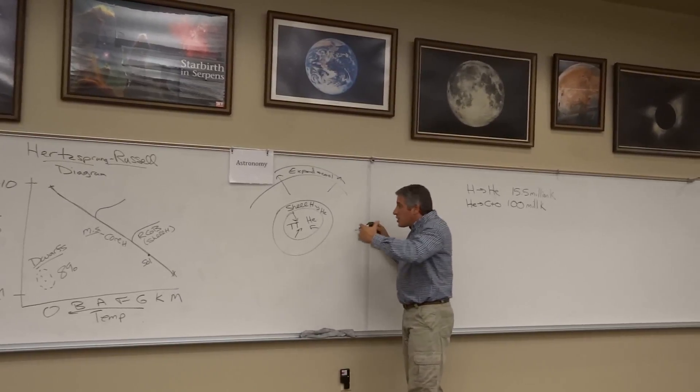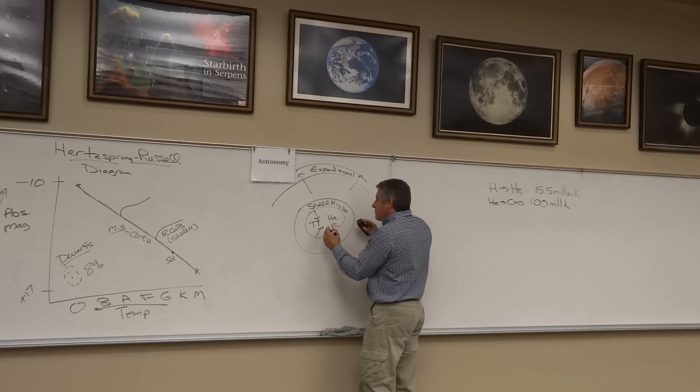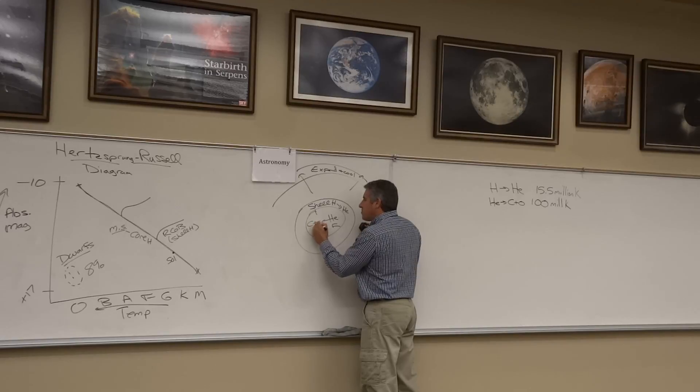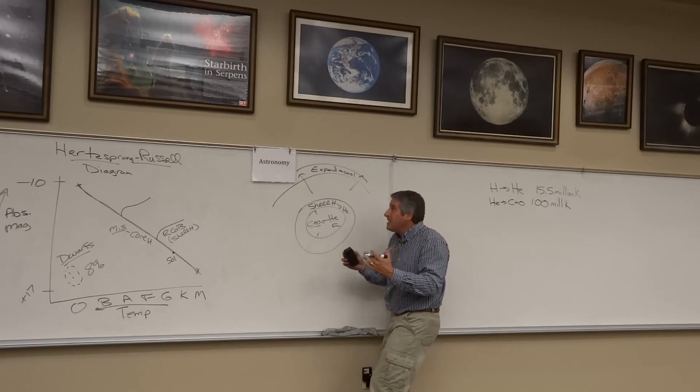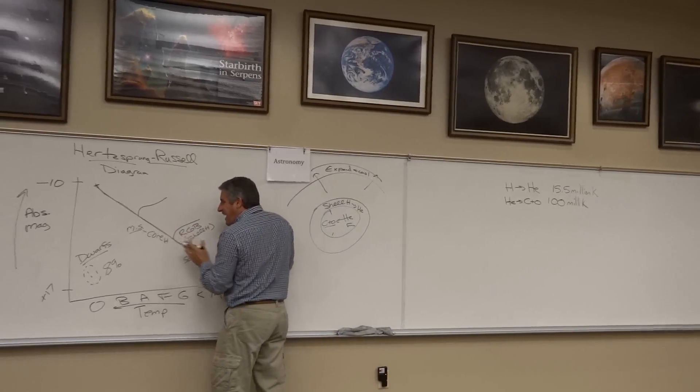And then, as the core continues to collapse, helium ignites. So the helium core begins to ignite at 100 million Kelvin. Helium begins to burn into carbon and oxygen. Great! But now we're pushing more energy out through these outer layers, so the star gets hotter.